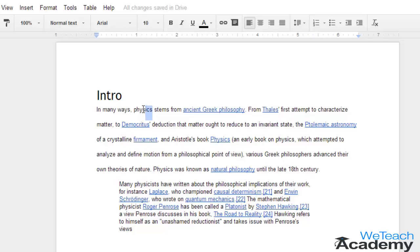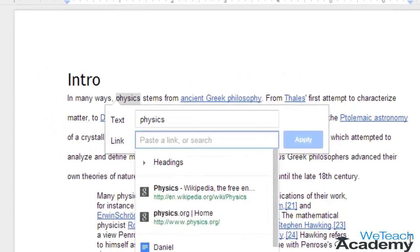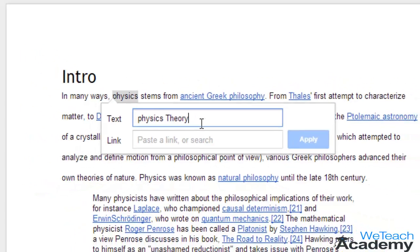You can also add a link to your text or image by highlighting the text which you want to link. In the pop-up menu you can add, remove, or change the text which you want to give for your link.